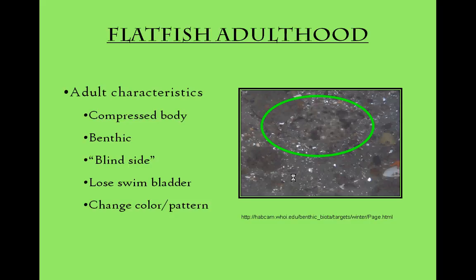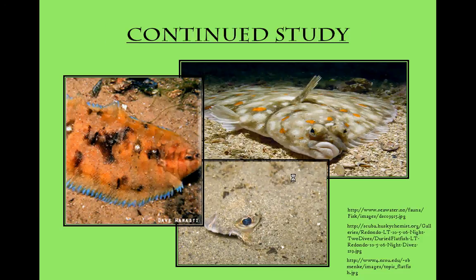Seen here is a winter flounder, altering its patterns to associate itself with the substrate on the ocean floor. The metamorphosis of flatfish is a natural phenomenon which continues to amaze even the most learned scientists. There are many factors that influence this dramatic structural and physical change within these fishes, some of which are still unknown. Continued study of these natural processes will allow us to gain further insight as to how and why these changes occur.